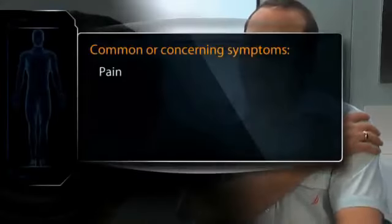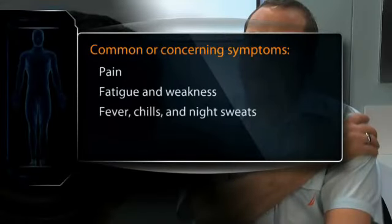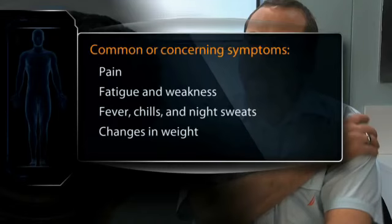Before beginning any physical examination, elicit a careful history to clarify the patient's concerns. Common or concerning symptoms relating to the general survey and vital signs include pain, fatigue and weakness, fever, chills and night sweats, and changes in weight. Pain is one of the most common presenting symptoms in office practice — an estimated 76 million Americans report intermittent or persistent pain each year. The seven features of pain, especially severity on a scale of 1 to 10, localizing symptoms, and the psychosocial history are essential to your physical examination, assessment, and a comprehensive management plan.